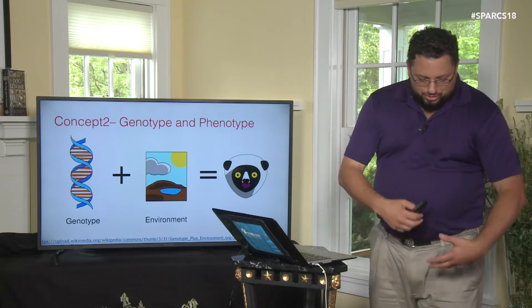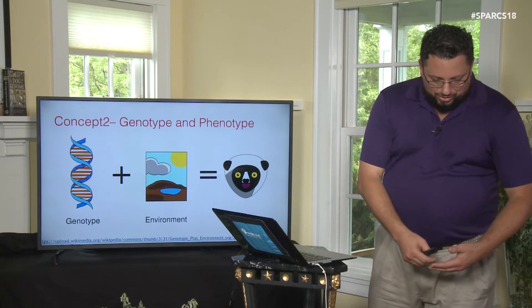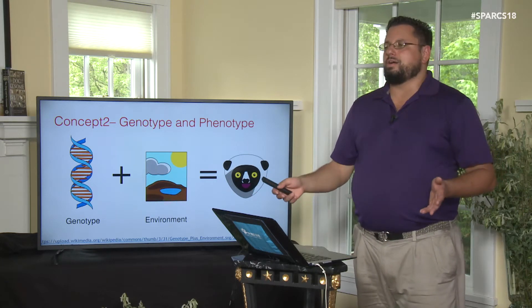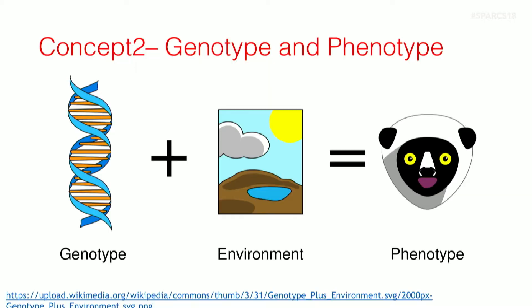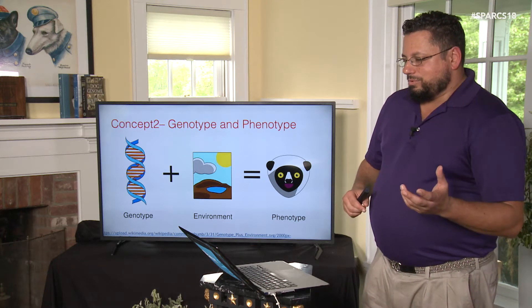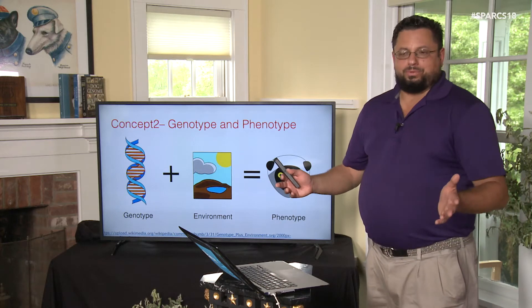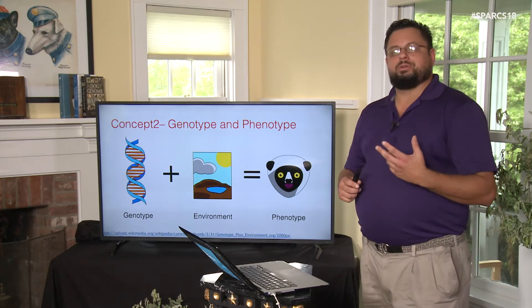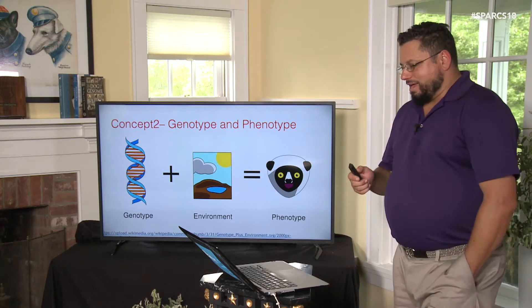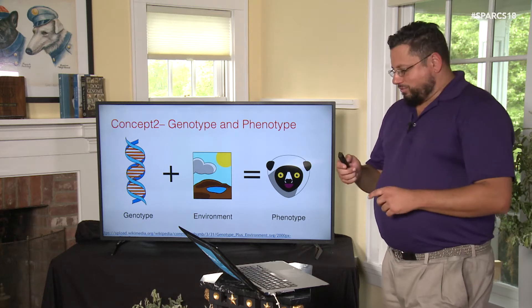You have a biological system with a set of instructions encoded in its genome on what to do in a variety of environments. In environment A, if there's a genetic program that can turn on, that program will turn on. In environment B, another program turns on. Genotype plus environment gives a wide range of variation in phenotypes. Remember: genotype plus environment equals phenotype.